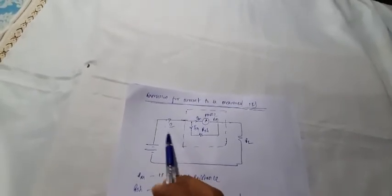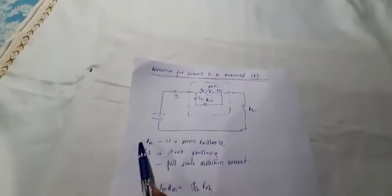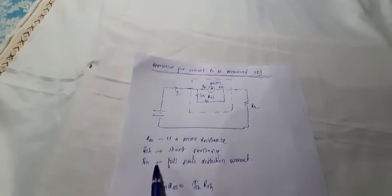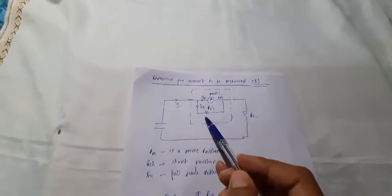Now we will try to derive and find the equation for current I, because we want to measure current I and we want the expression of current I in terms of the parameters of the ammeter. RM is the PMMC resistance, RSH is the shunt resistance, and IM is the full scale deflection current. From the diagram you can see PMMC is in parallel with RSH.